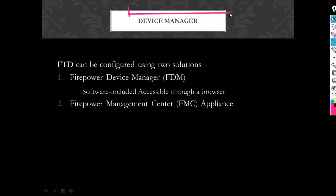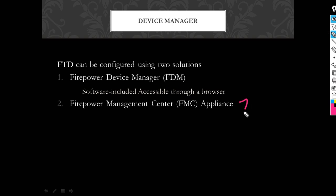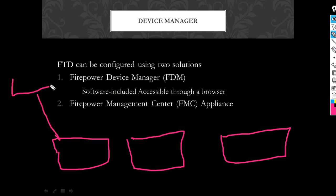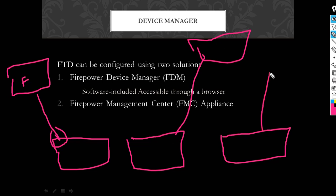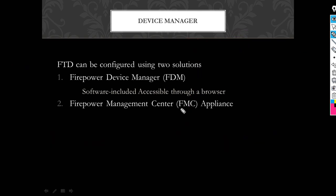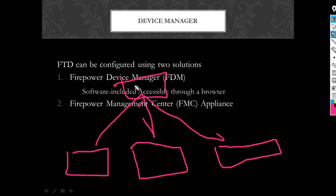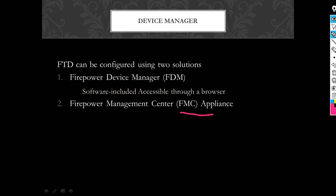There are two ways to manage your FTD device: FDM and FMC. FMC is recommended. With FDM, each device has its own FDM — so if you have three FTD devices you need three separate FDMs, which is really hard to work with. But using FMC, if you have multiple devices in your premises, you can centrally manage all devices using one FMC. So FMC is recommended.